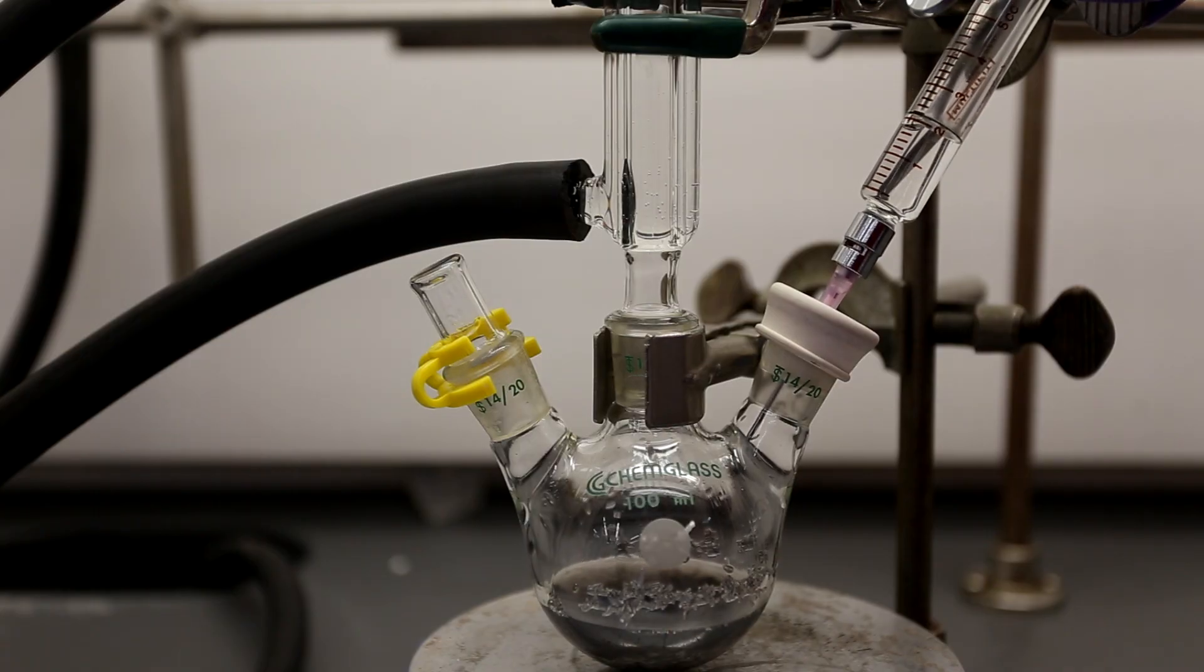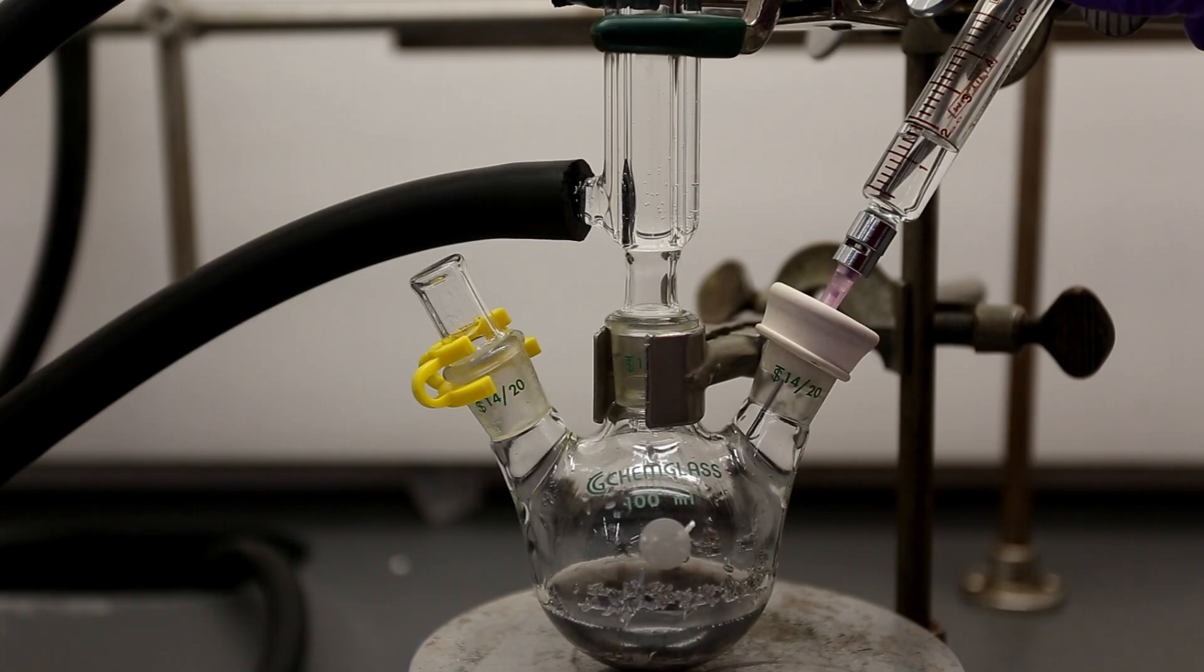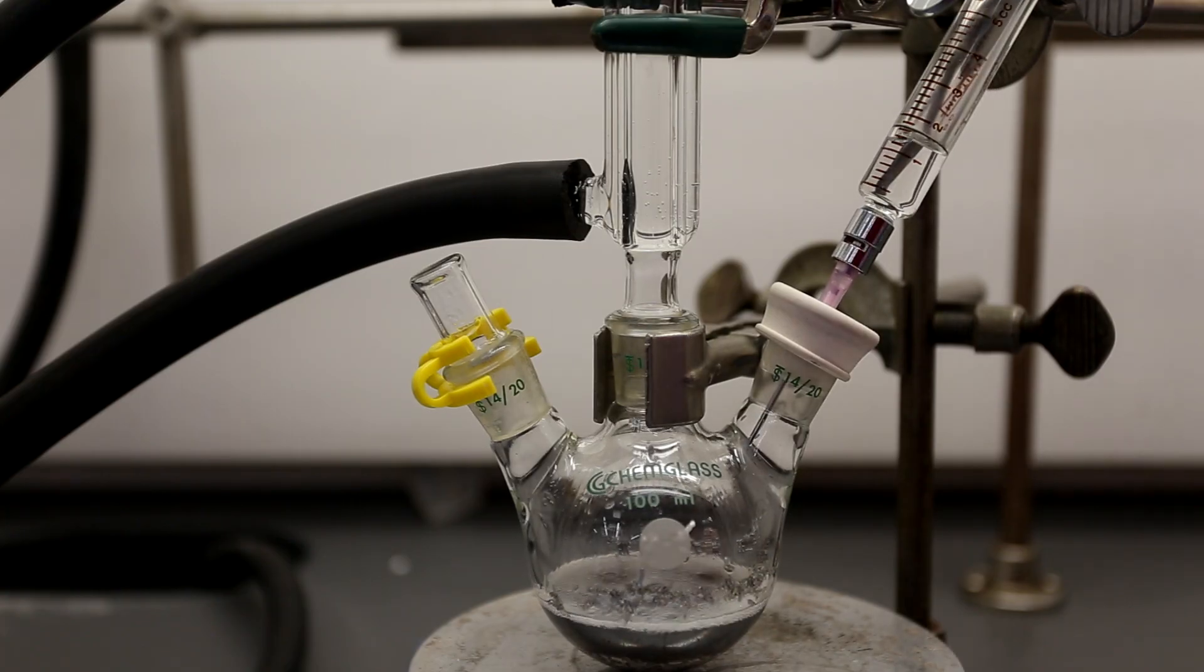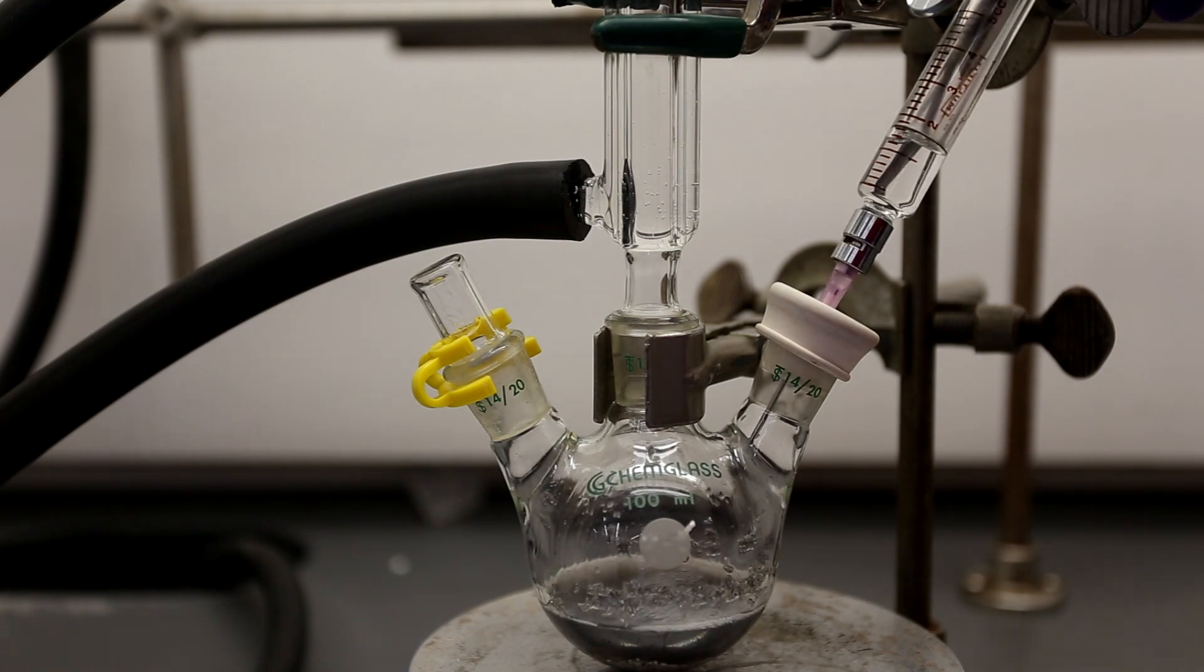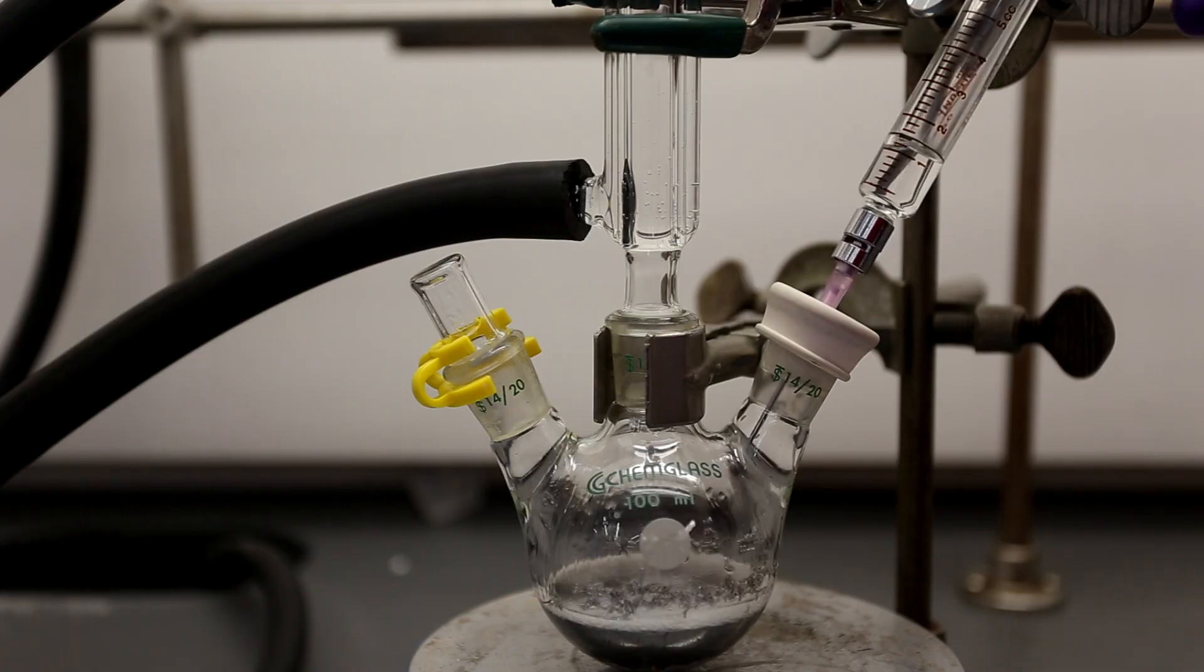As the reaction progresses, I keep injecting ether in order to try to maintain a constant volume. If you use a very cold condenser column, you probably don't have to do this, but since I'm just using tap water, a lot of the ether was lost out the top.